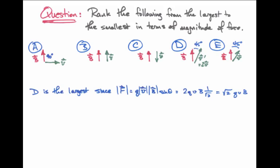The largest force in any of these pictures is actually case D. We know that in magnitude, the vector cross product is the product of the two magnitudes of the vectors times the sine of the angle between them.